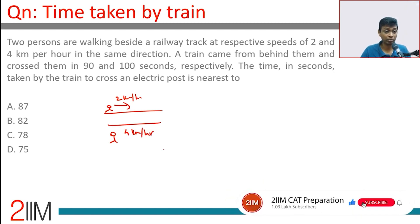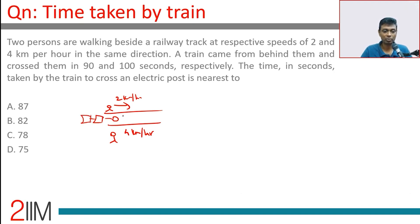A train came from behind them and crossed them in 90 and 100 seconds respectively. The train crosses them - that means the length of the train is crossed. Relative to the train, speeds are t minus 2.